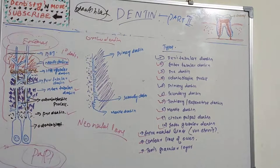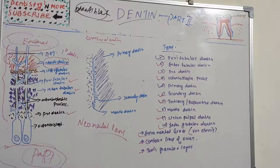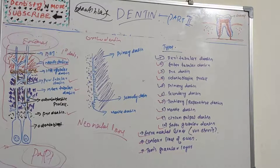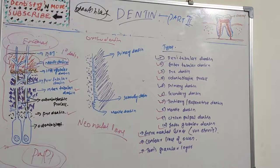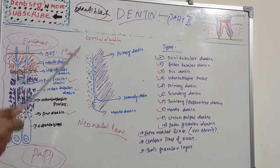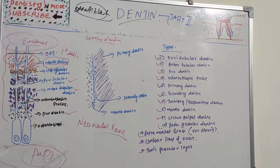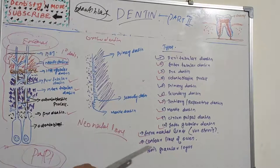Next we have Tomes' granular layer, which is different from Tomes' process. Tomes' process was the ameloblastic process involved in production of tooth enamel. Tomes' granular layer is a zone adjacent to cementum in root dentine that appears granular. It increases in amount from the cemento-enamel junction to the root apex. It is caused by coiling and looping of the terminal portions of the dentinal tubules. Remember: Tomes' process is in enamel; Tomes' granular layer is in dentine.